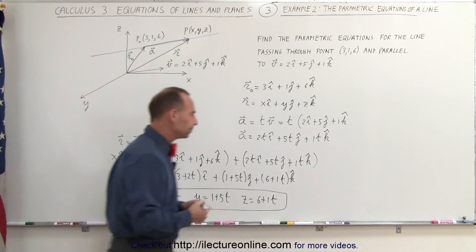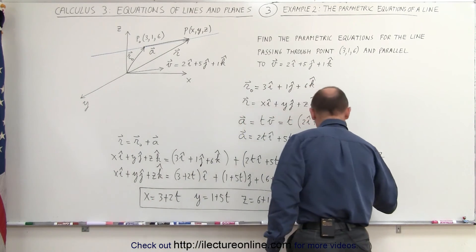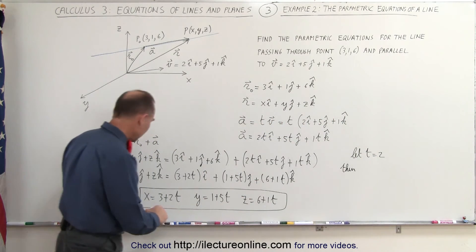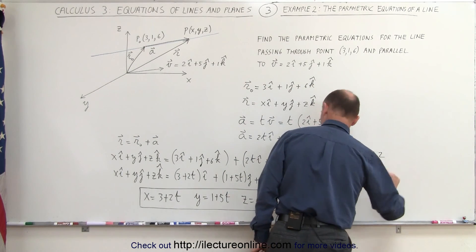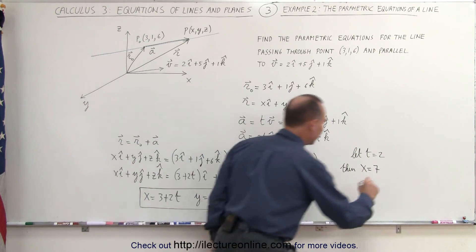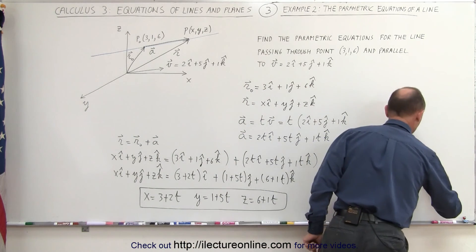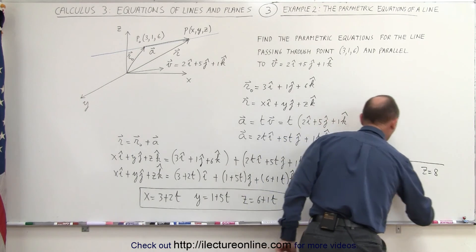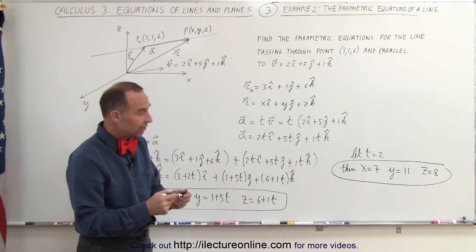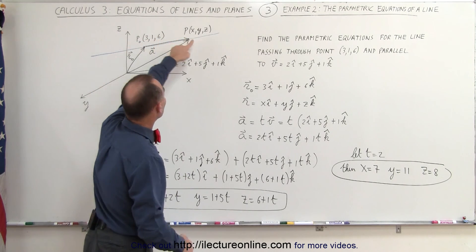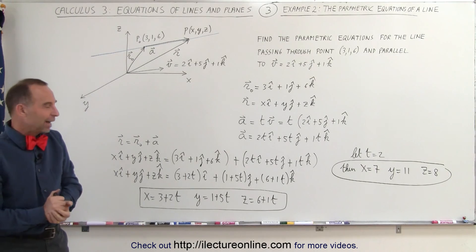As an example, let's try t equals 2. If t equals 2, then x equals 3 plus 4, which is 7. Y will be 11, and z would be 8. So these are the coordinates for another point on the line: x equals 7, y equals 11, z equals 8. We had one known point on the line, and a second point can be found by picking any value for t and using these three parametric equations. That's how that's done.